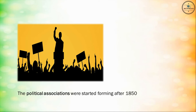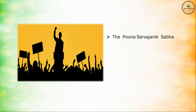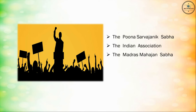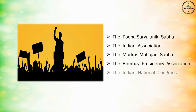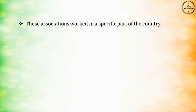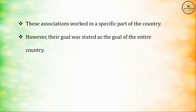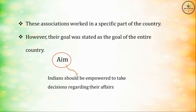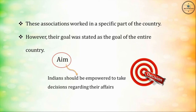Political associations started forming after 1850. The important associations were the Puna Sarvajanik Sabha, the Indian Association, the Madras Mahajan Sabha, the Bombay Presidency Association, and the Indian National Congress. These associations worked in a specific part of the country. However, their goal was stated as the goal of the entire country. Their aim was that Indians should be empowered to take decisions regarding their own affairs.